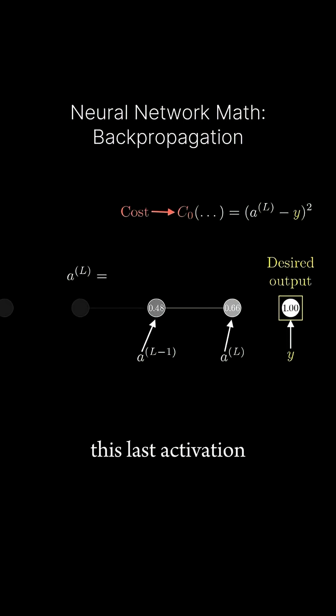This last activation is determined by a weight, which I'm going to call WL, times the previous neuron's activation, plus some bias, which I'll call BL. And then you pump that through some special nonlinear function like the sigmoid or ReLU.